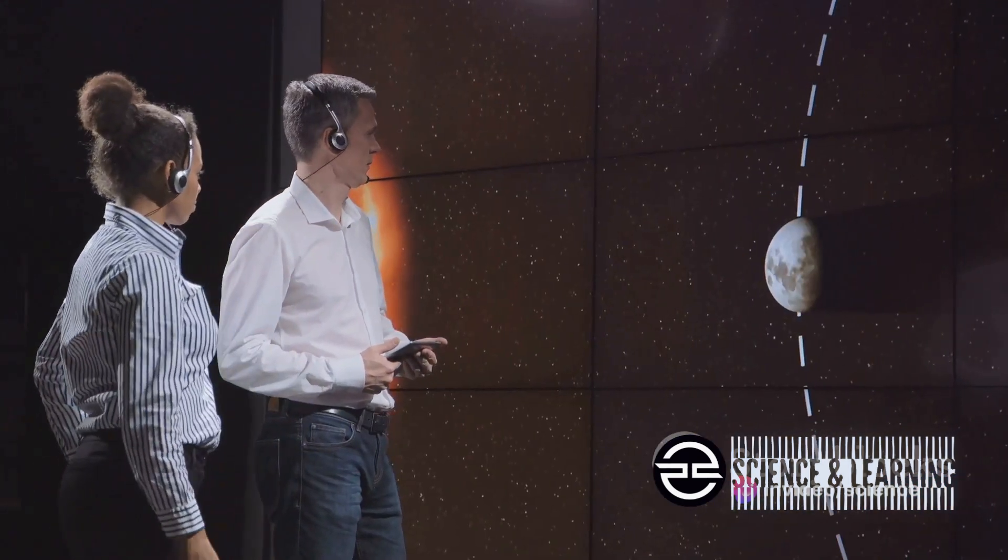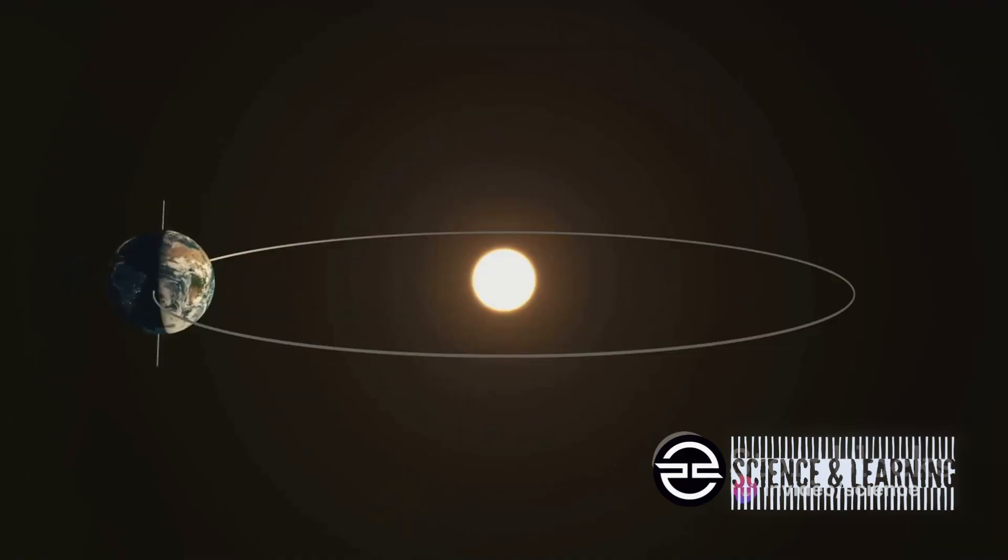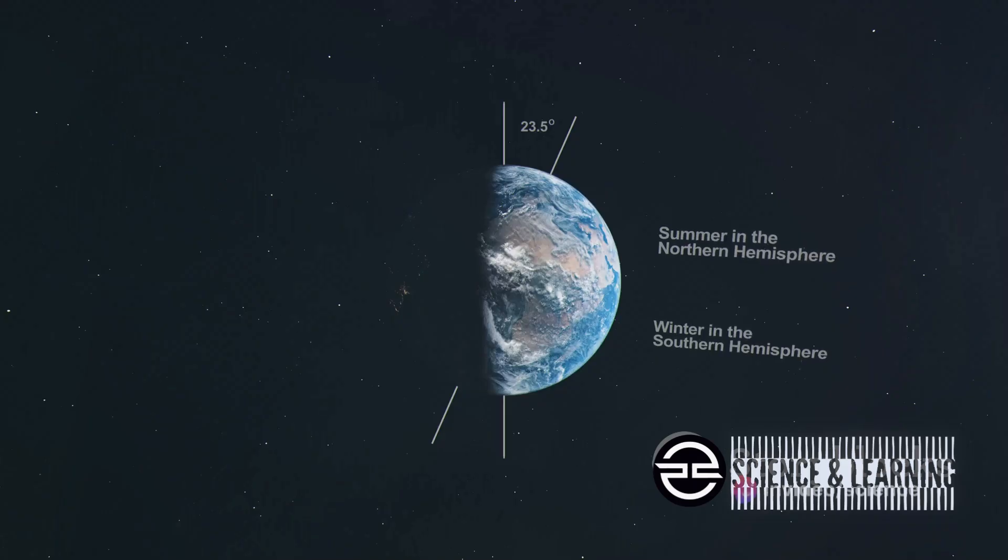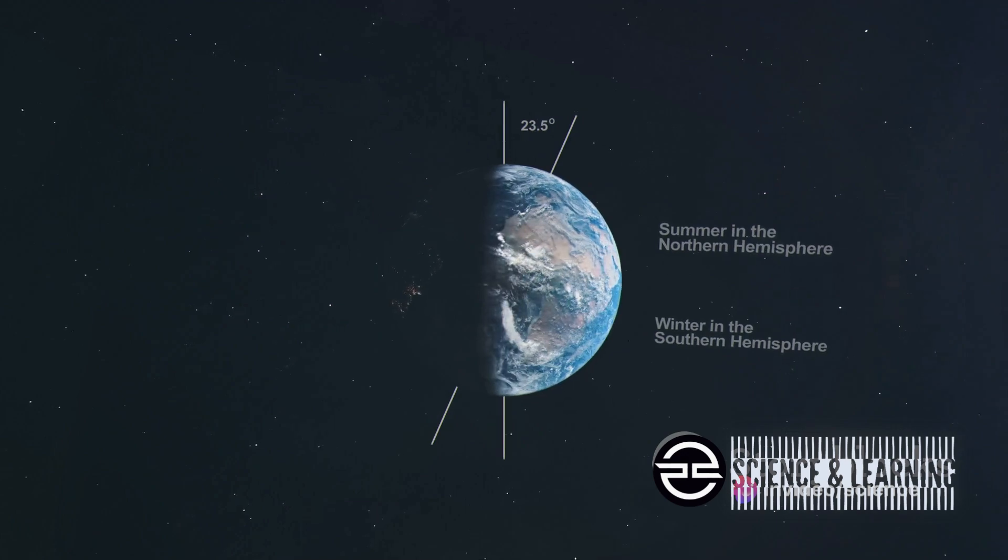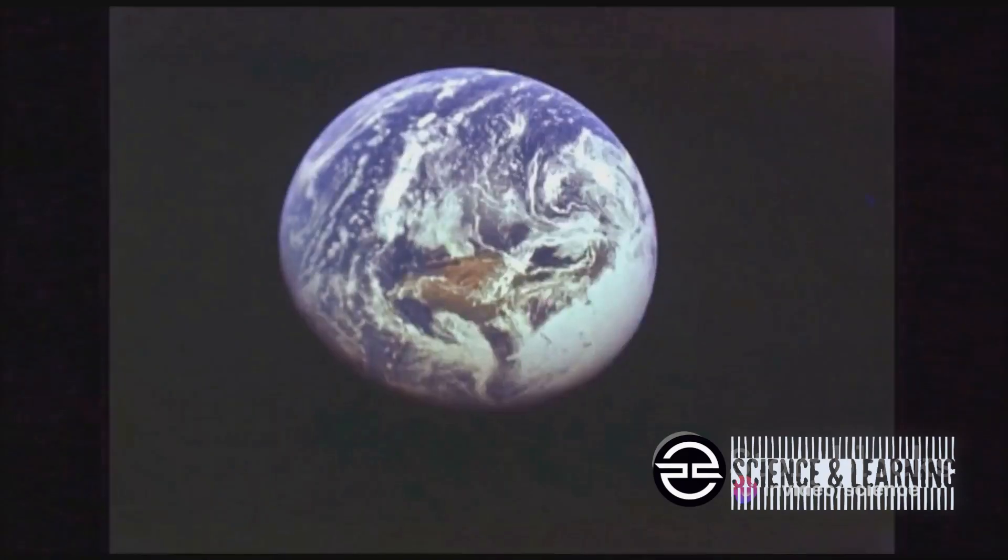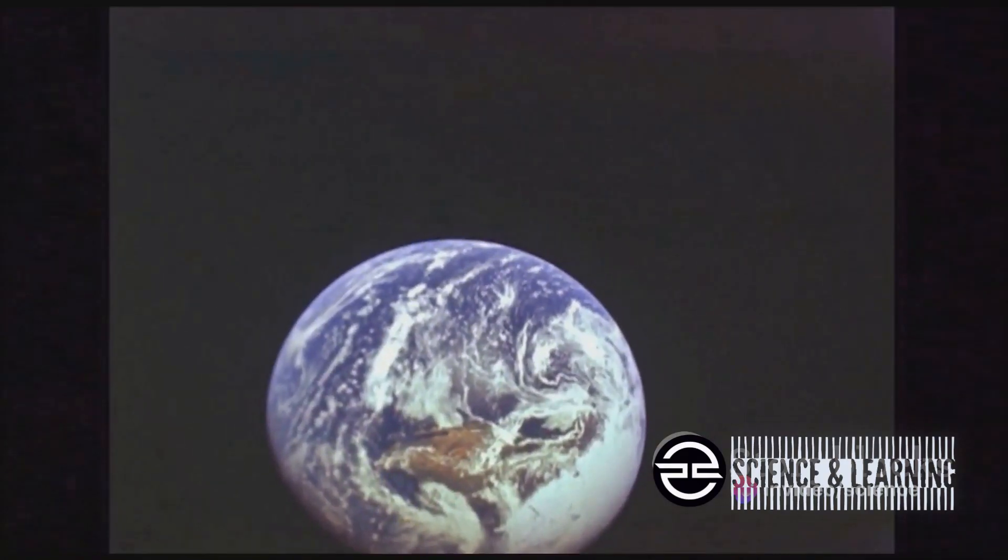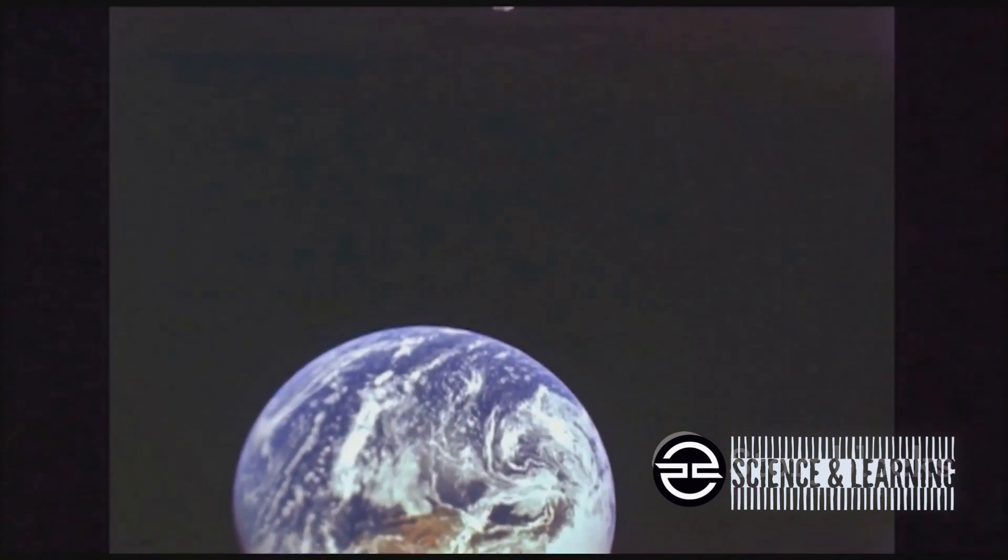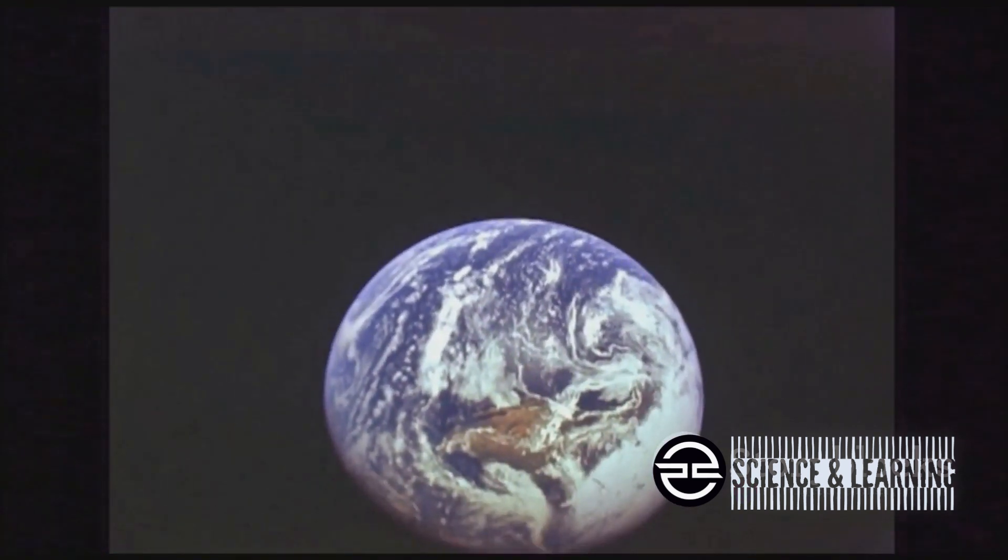There are three key components to these cycles: obliquity, eccentricity, and precession. Obliquity refers to the tilt of our Earth's axis. It varies between 22.1 and 24.5 degrees over a cycle of 41,000 years. This tilt affects the distribution of sunlight, and thus the seasons on Earth.